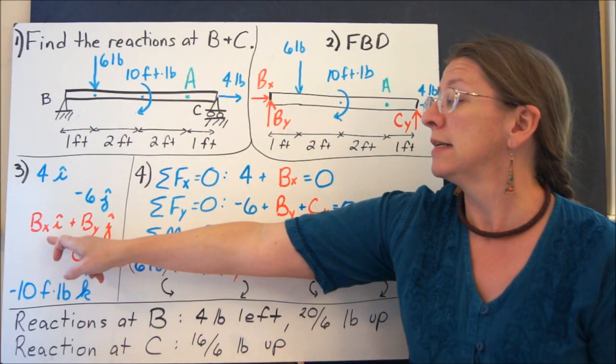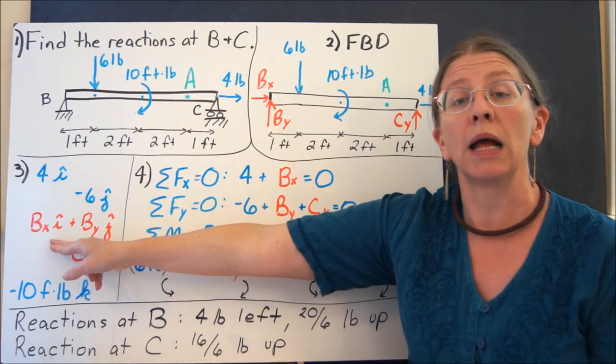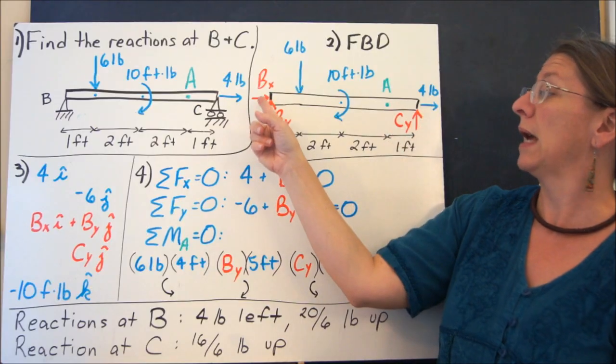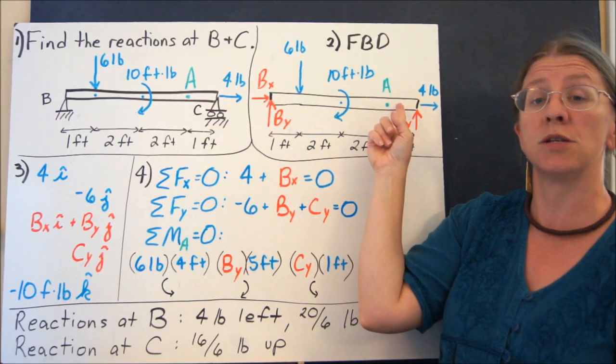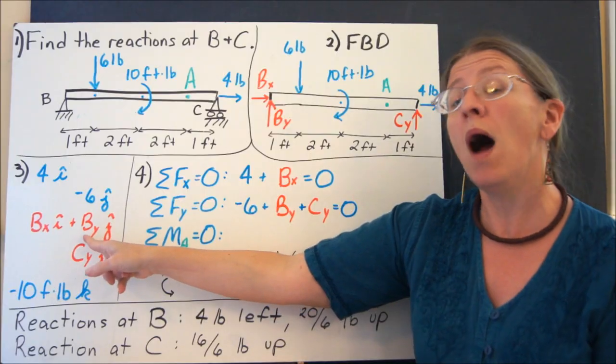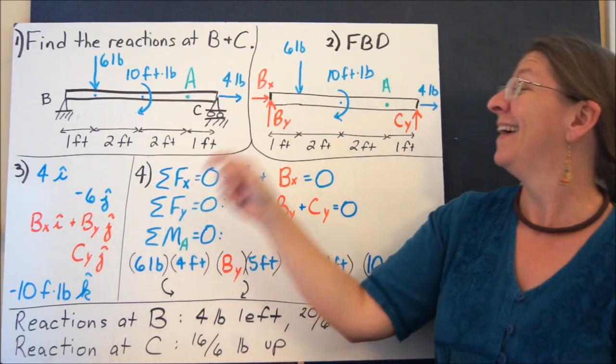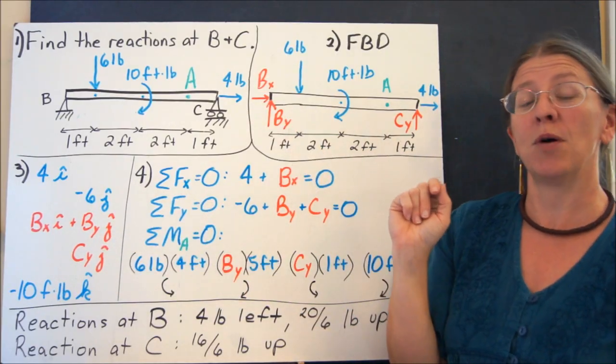If we continue through here, does BX create a moment at A? No. BX has a line of action that passes through point A. Does BY create a moment at A?